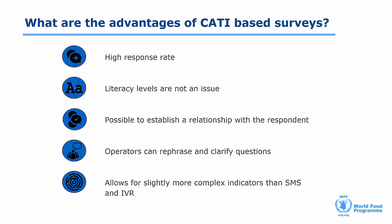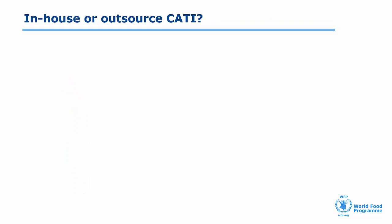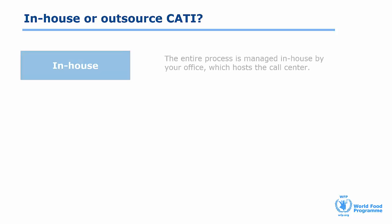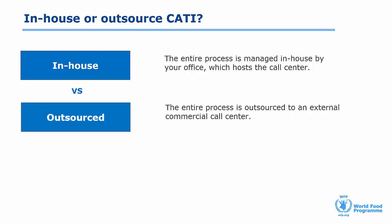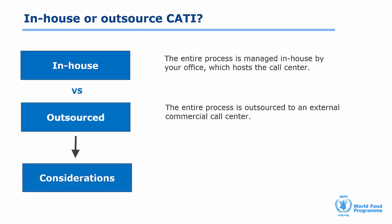We will now look at different options for setting up a CATI system. First you have to decide where it will be hosted. You could host it in-house, meaning the process is managed by your office and it also hosts the call centre. Alternatively, you can outsource your surveys, meaning an external professional call centre manages the process. When deciding which deployment to go for, firstly think about the volume of the sample — how many phone numbers do you plan to call in a given time. We recommend an external call centre if volumes are high.